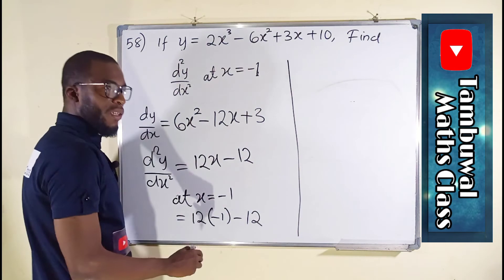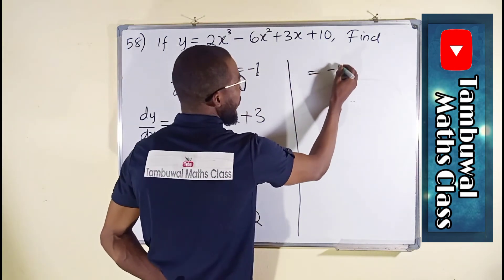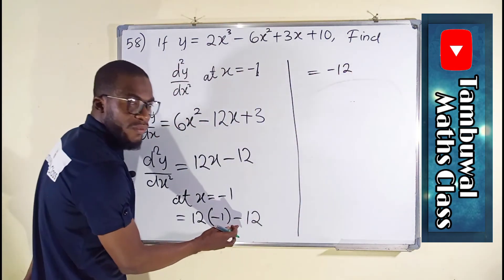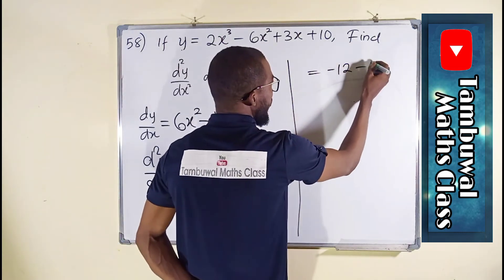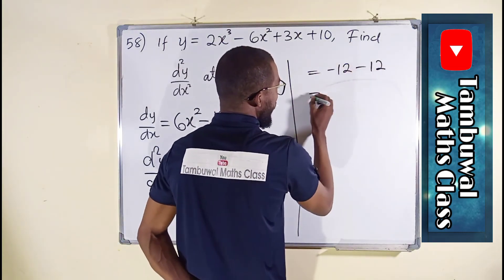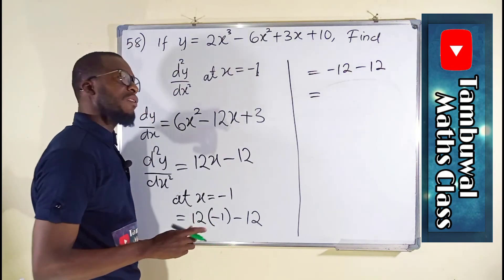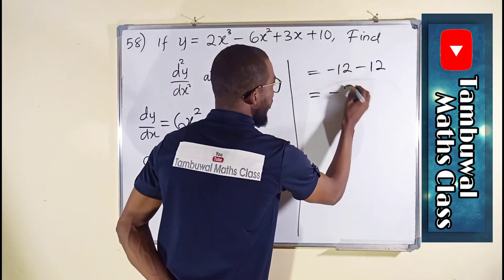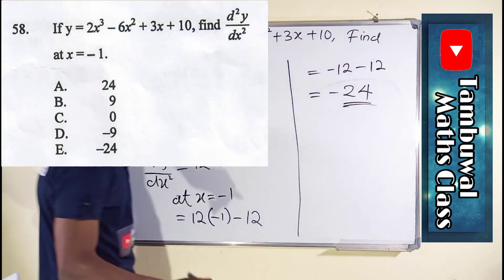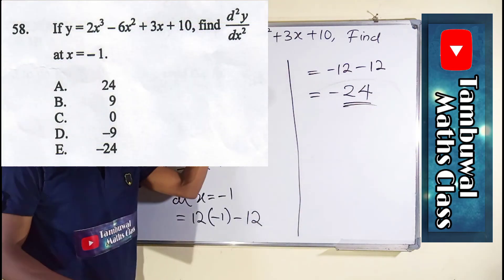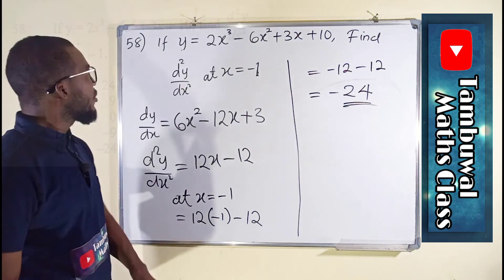12 times negative 1 is negative 12. Then we have negative 12 minus 12, and this is equal to negative 12 minus 12, which is negative 24. We have negative 24, and this is our answer at x equal to negative 1.